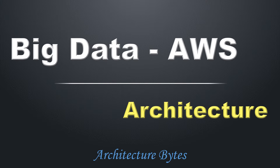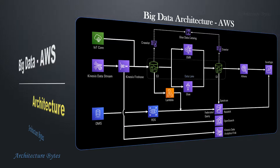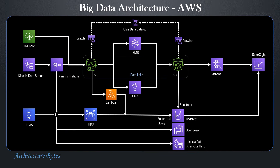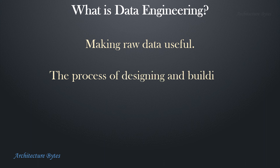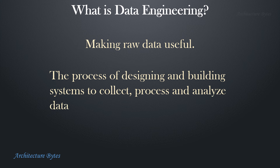Big Data Architecture on AWS. Our goal is to understand AWS big data services in this architecture. Before that, let's begin with some basics about data engineering. Data engineering, in simple words, is making raw data useful. It is the process of designing and building systems to collect, process, and analyze data from multiple sources and formats.